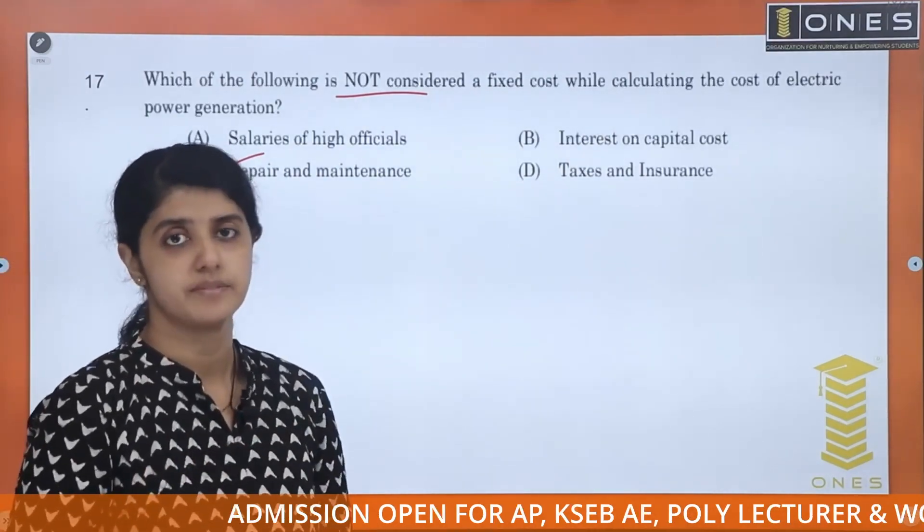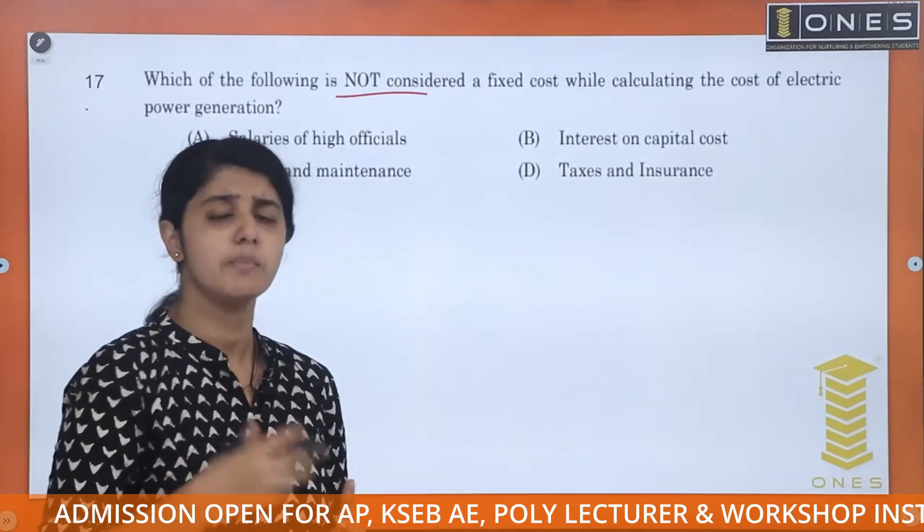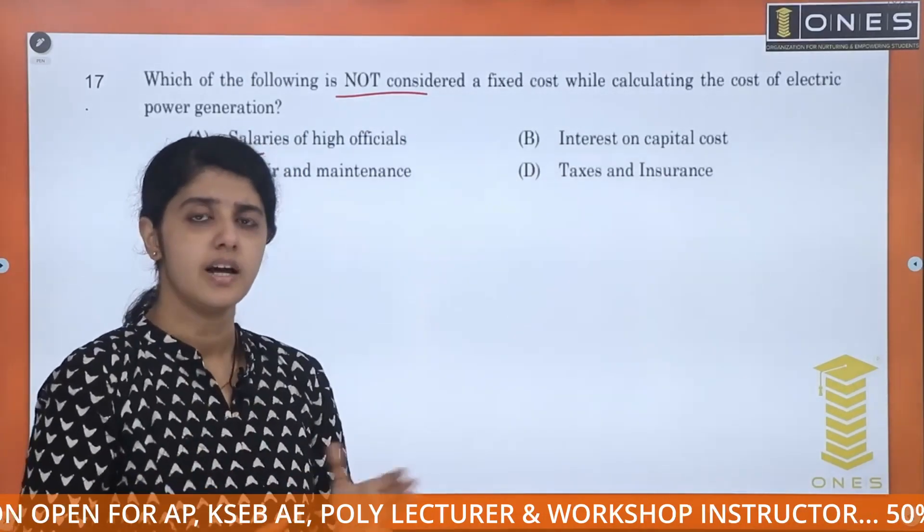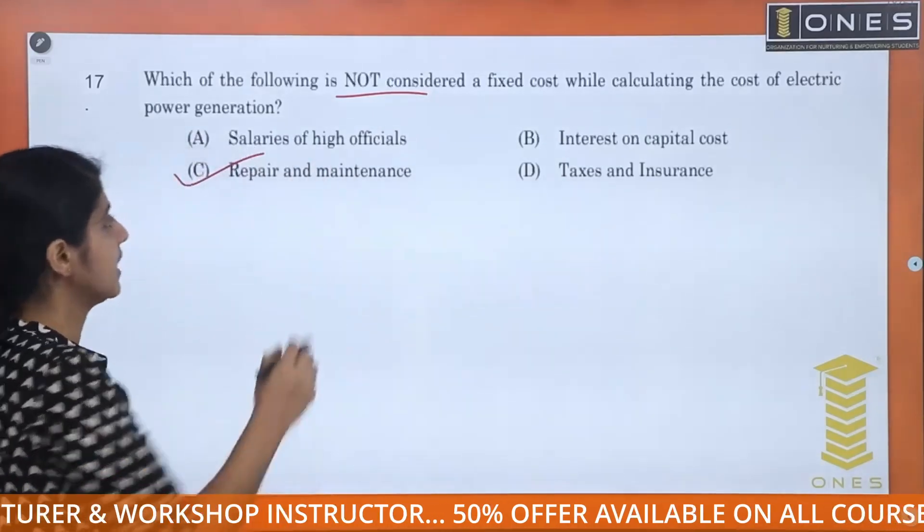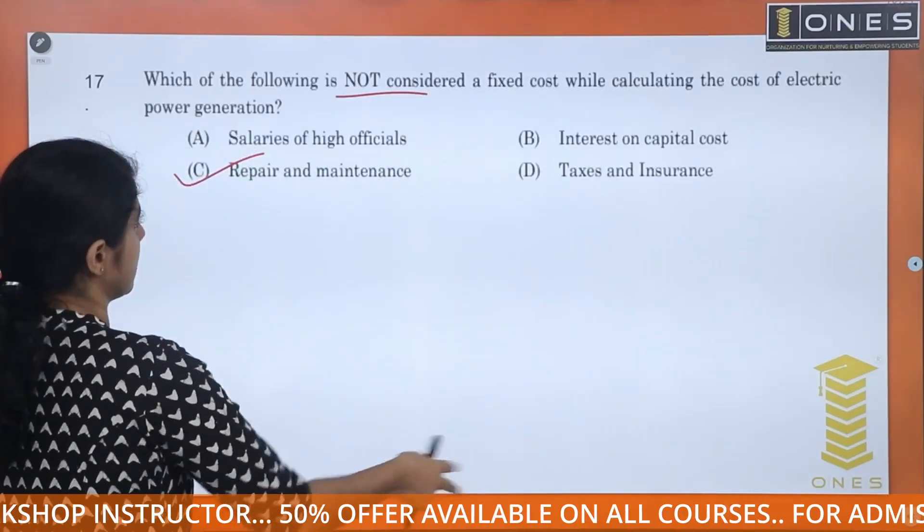That is running cost. If you have a plant to work, then you have a cost in the generation, depending on the cost, running cost. Then you have repair and maintenance cost.